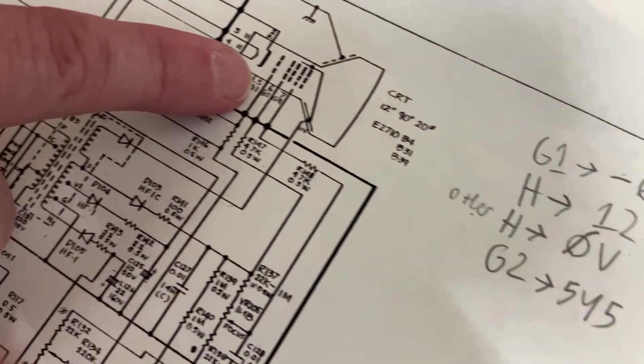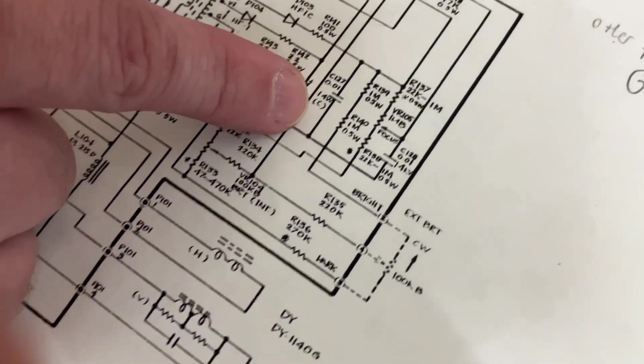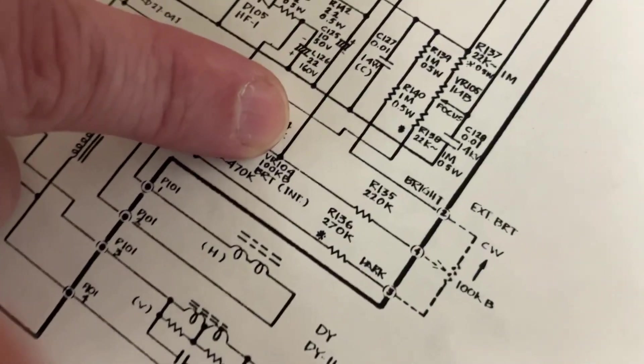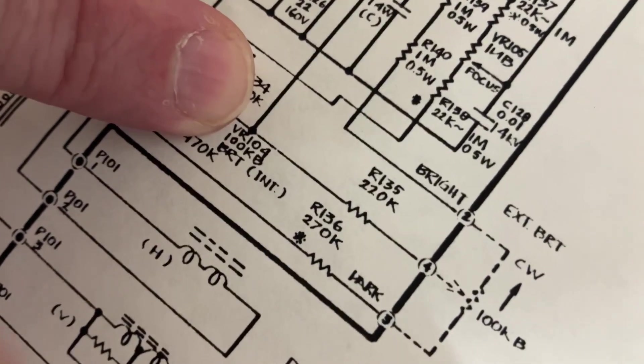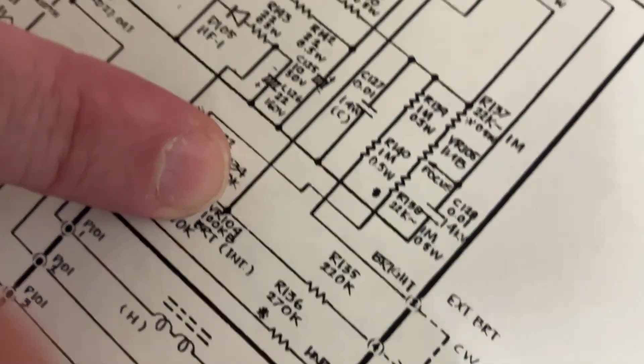This G1 test point for measuring minus 6.4 volts. So let's look at where this goes. This goes down here through this resistor to this brightness knob, this intensity knob. So I'm just going to try to adjust that and see if my son can see lines appearing on the display.